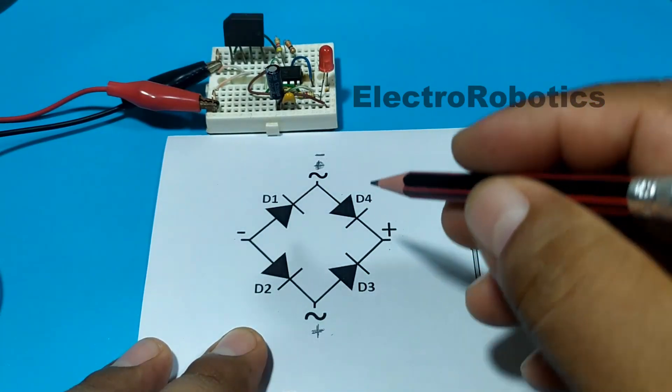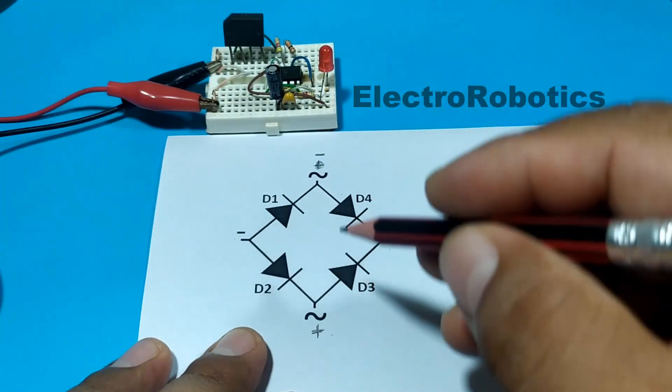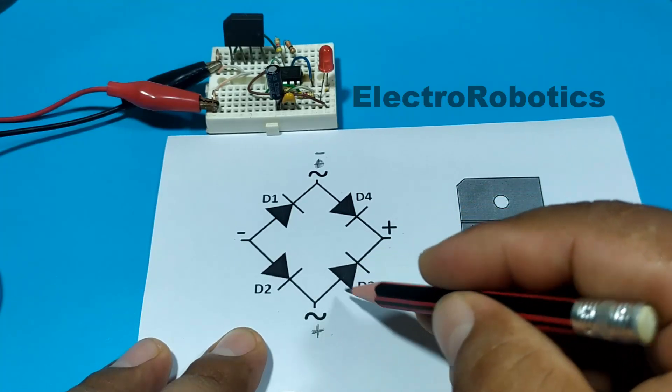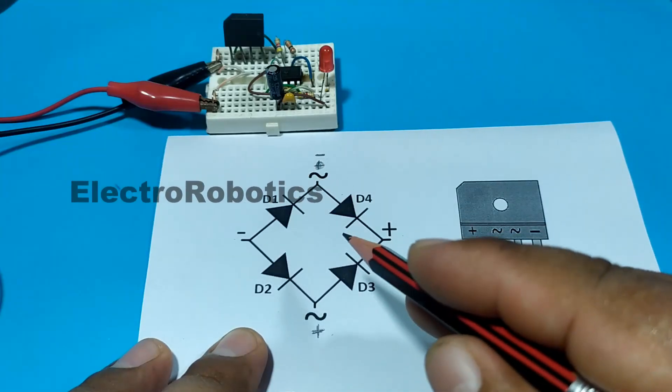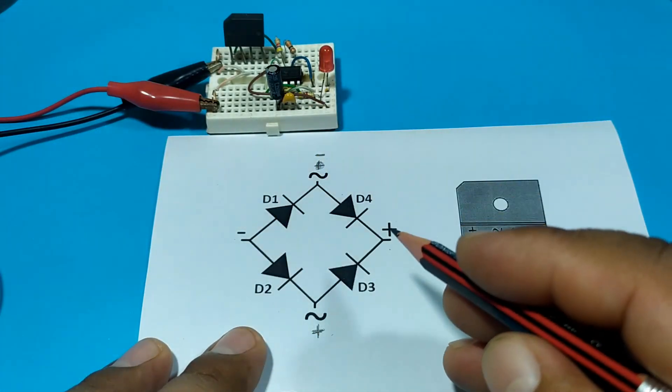For example, in this case negative goes through D1 and positive will go through D3. So we have 0.7 here and 0.7 here. So we have a loss of about 1.4. Let's do the measurements and check that detail.